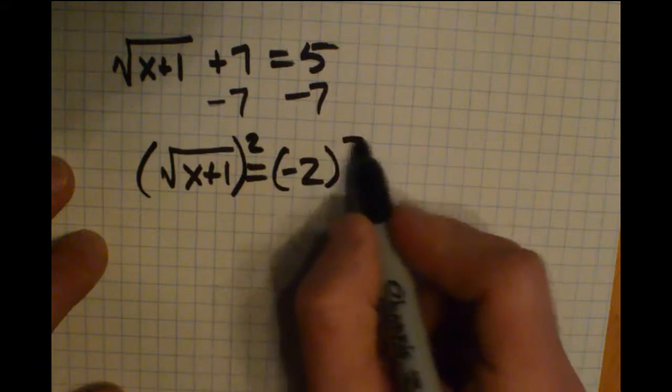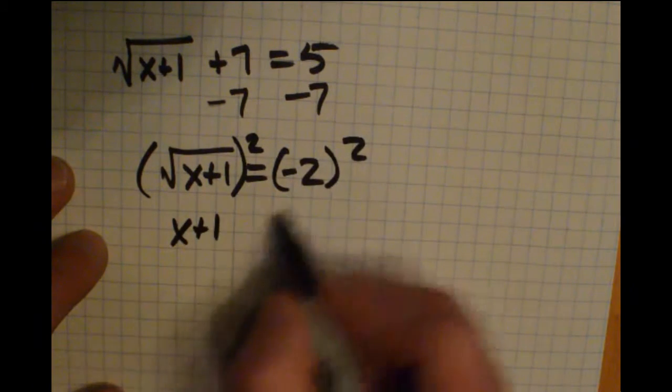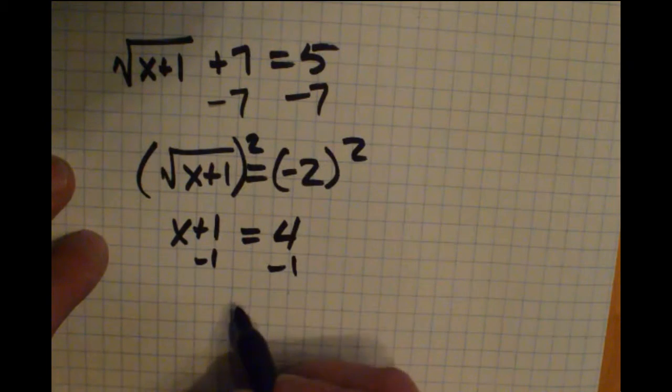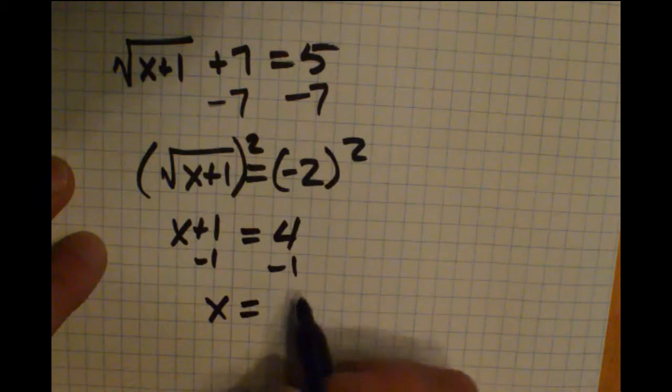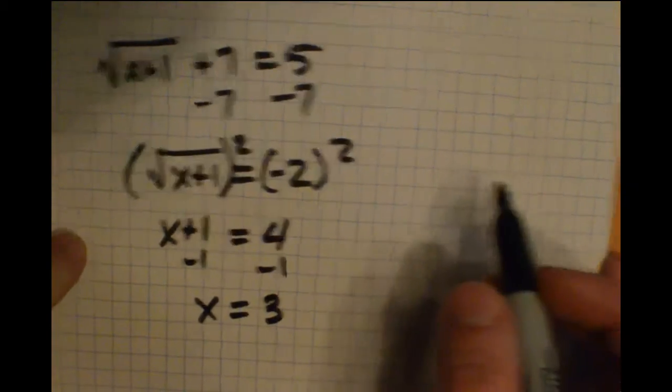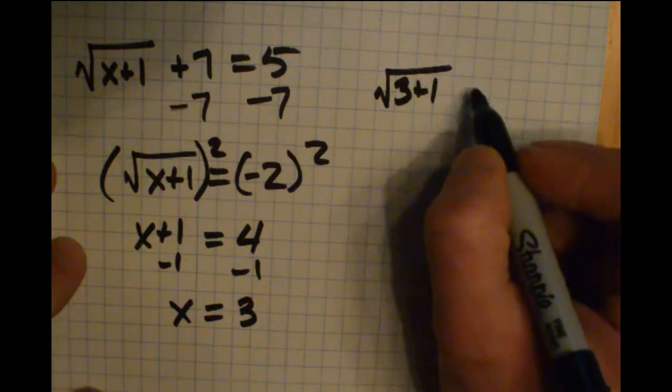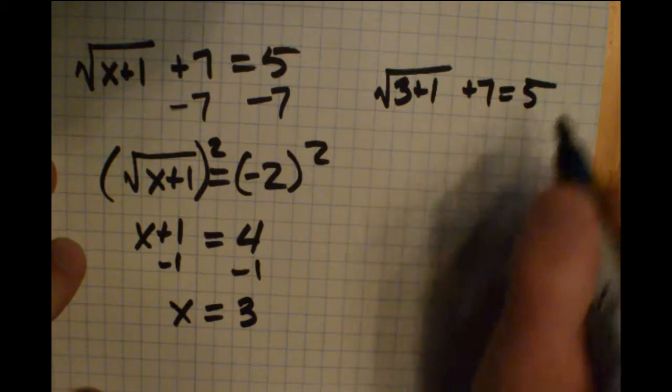If you square the left side, you get x plus 1. Square the right side, negative 2 squared is 4. I seem to have gotten a solution of x equals 3. But if we go back into the equation and check it, I have 3 plus 1 in the square root plus 7 equals 5.